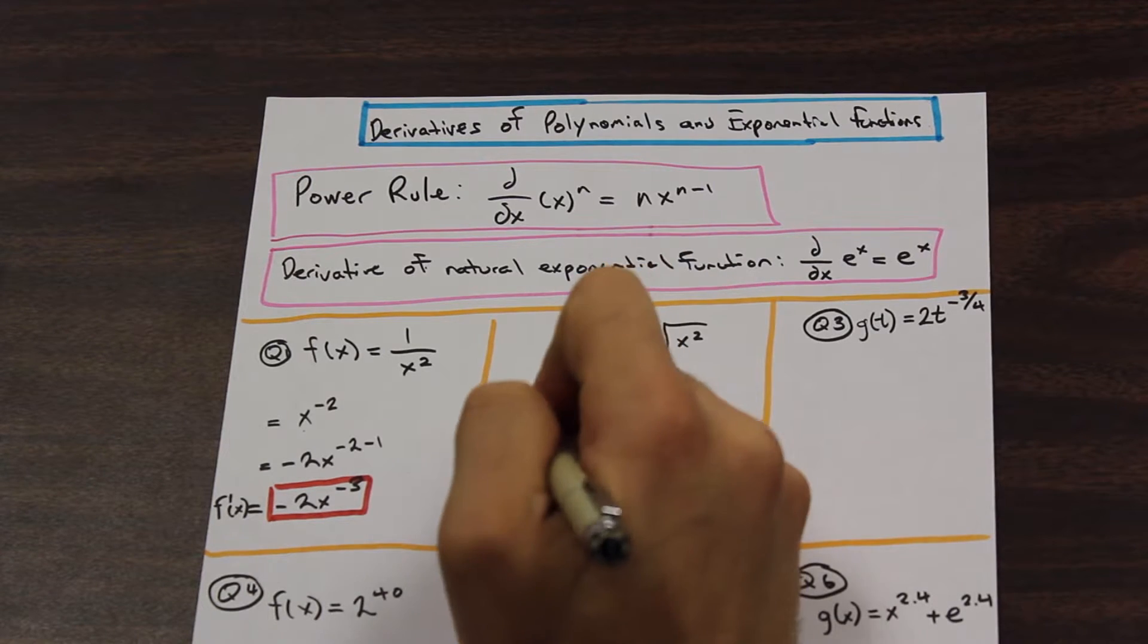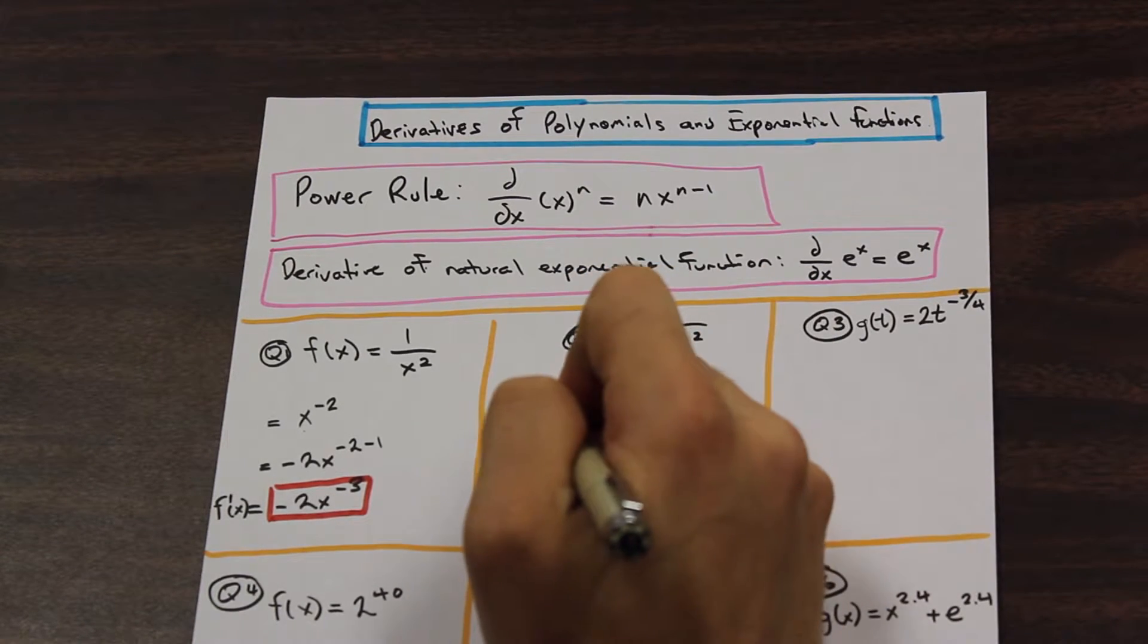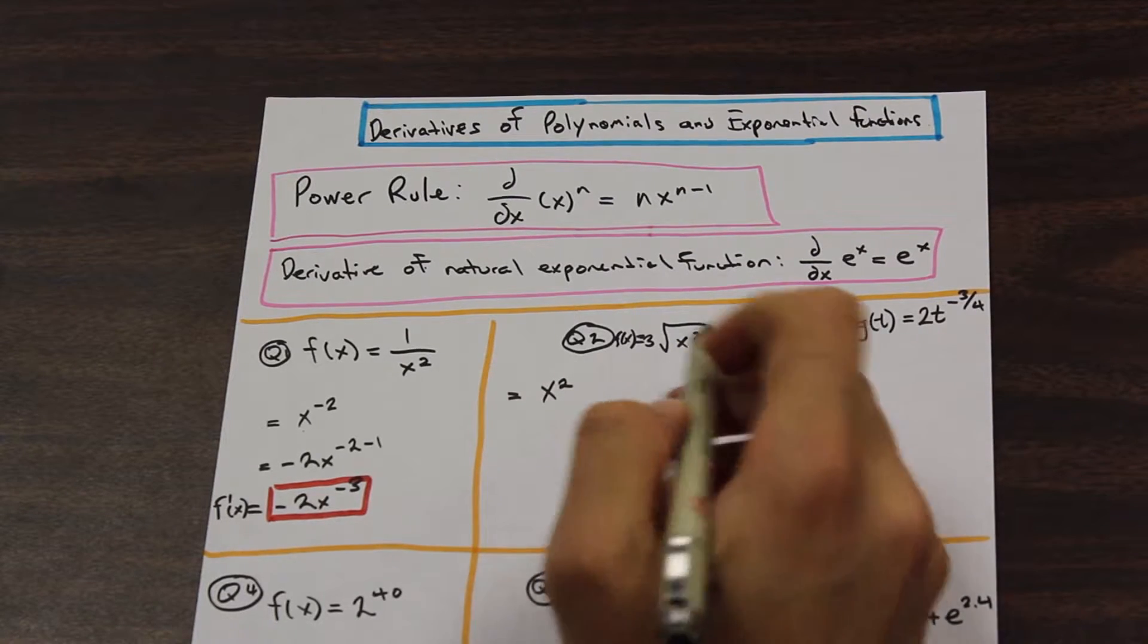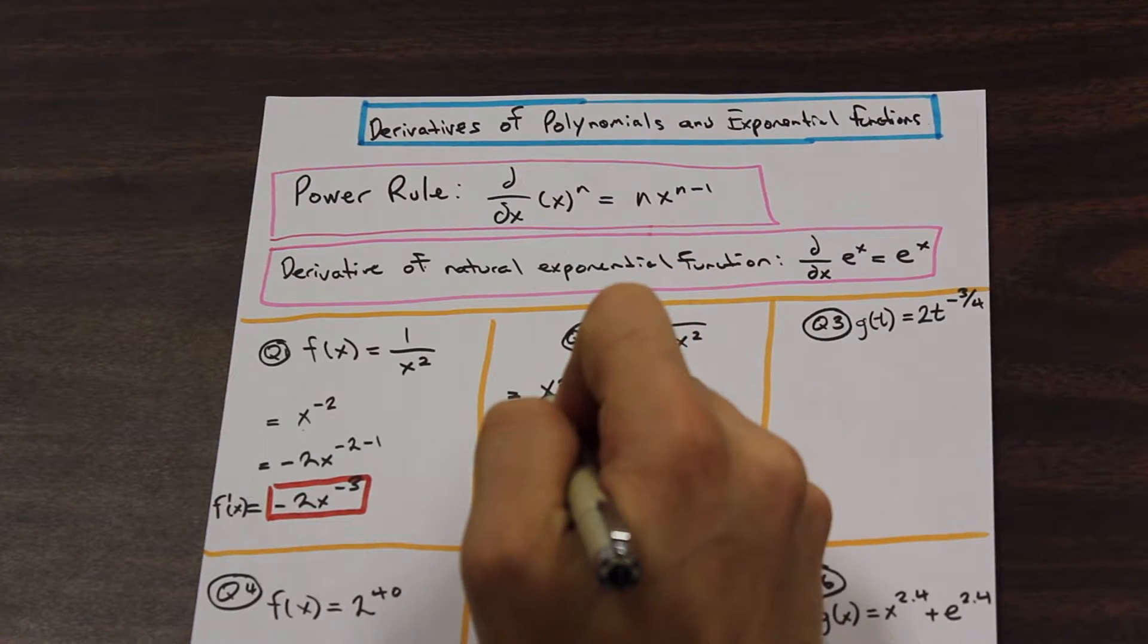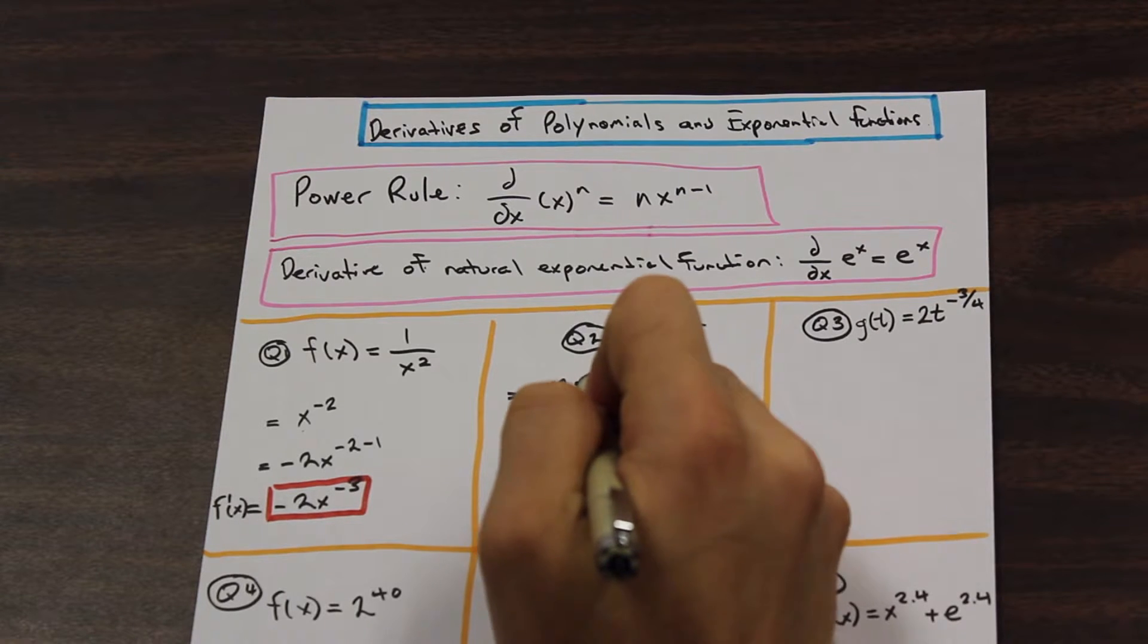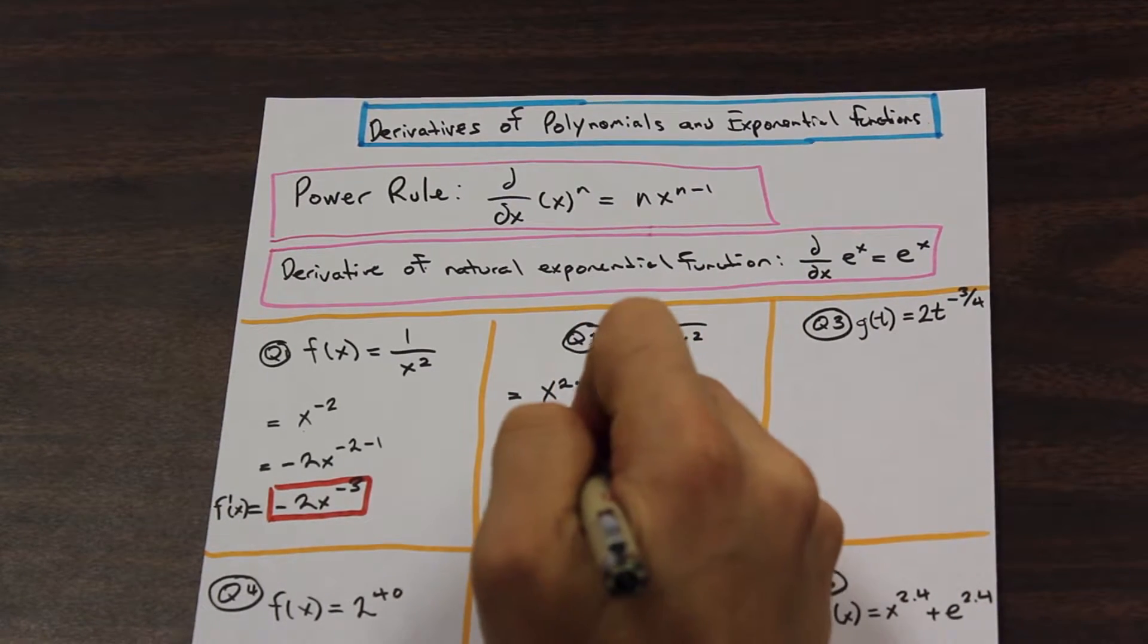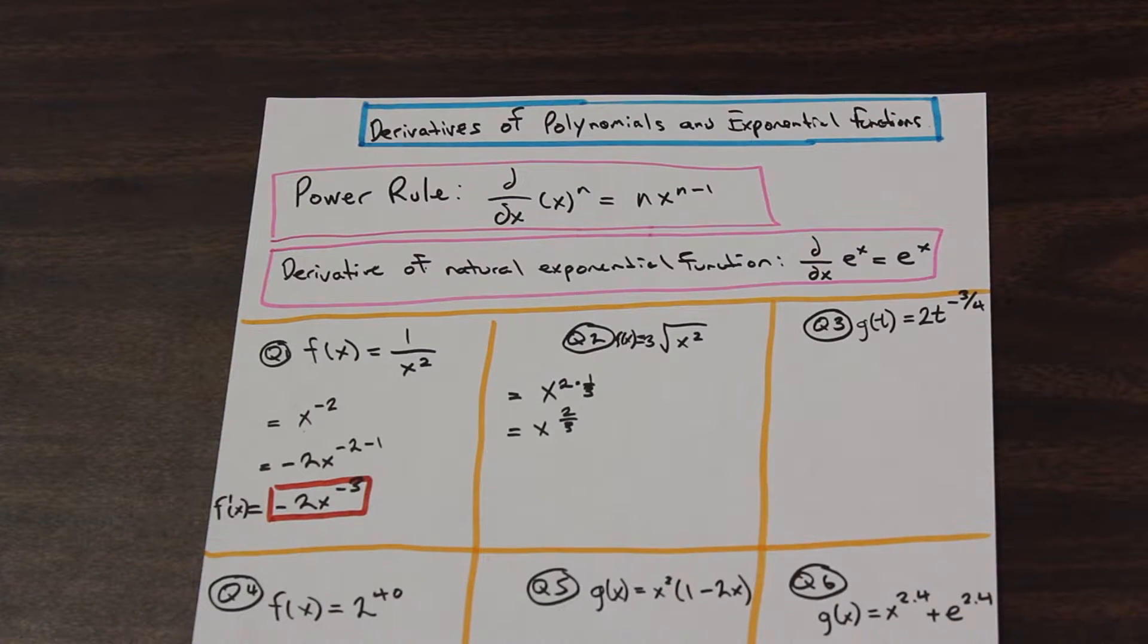So how do we write a third root again, if you'll recall? We'll say that we have x squared. And the third root is the same as x to the power of 1 over 3. So we have x squared, and then that squared is times 1 over 3. So that gives us x to the power of 2 over 3.